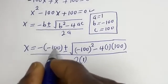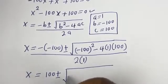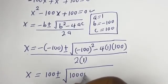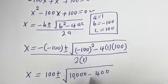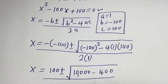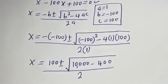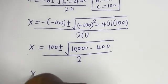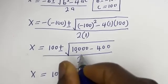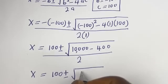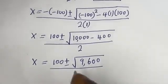x is equal to 100 plus or minus square root of (minus 100) squared — that is 10,000 — minus 4 times 1 times 100, that is 400, divided by 2. So x is equal to 100 plus or minus square root of 10,000 minus 400, which is 9,600, divided by 2.